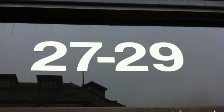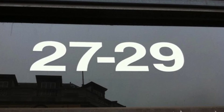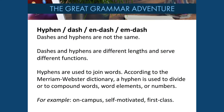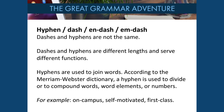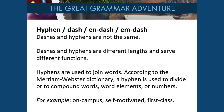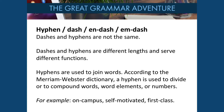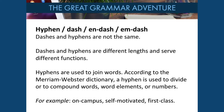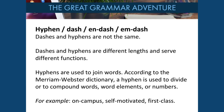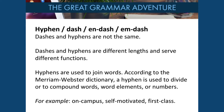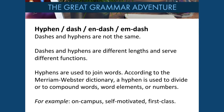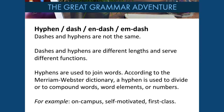Let's talk about hyphen, dash, en dash, and em dash. Dashes and hyphens are not the same — they are different lengths and serve different functions. Hyphens are used to join words: to divide or compound words, word elements, or numbers. For example: on-campus, self-motivated, first-class.